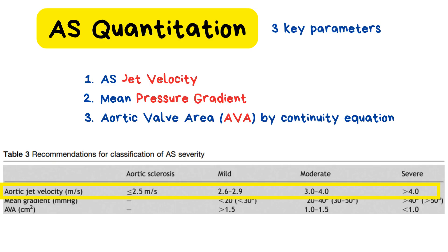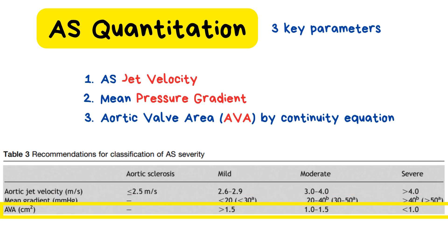If the aortic jet velocity is 3.9 meters per second, that places the patient in the moderate AS category. If the mean pressure gradient is greater than 40, that's a sign of severe AS. And if the aortic valve area is still greater than 3, that's considered physiologic, meaning the valve is functioning normally. However, if the valve area falls below 3 but stays above 1.5, we're looking at mild aortic stenosis.